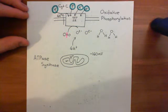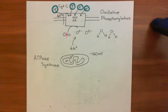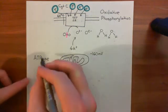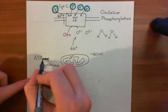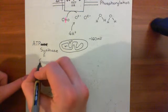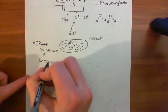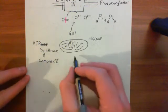When protons go down the electrical potential gradient, they release electrical potential energy. That electrical potential energy is going to be used by the ATP synthase to bind ADP to inorganic phosphate to create ATP — hence why it is called ATP synthase. ATP synthase is sometimes also called complex 5, and it has an absolutely fantastic structure.